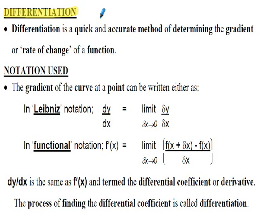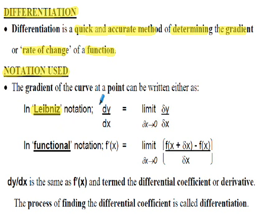From our previous presentation on differentiation, we found that it was a quick and accurate method of determining the gradient or rate of change of a function — basically finding the gradient at points on curves. There are two notations generally used in the literature. One is Leibniz notation, where y equals some function of x and the derivative is written as dy/dx. The second is function notation, relating to Isaac Newton's work: given f(x), when we differentiate we get f′(x). So dy/dx is the same as f′(x), and both are termed differential coefficients, or the derivative.